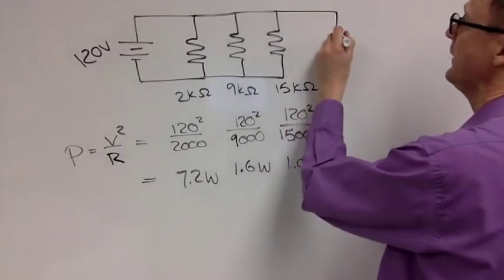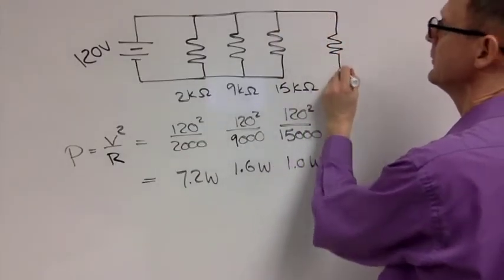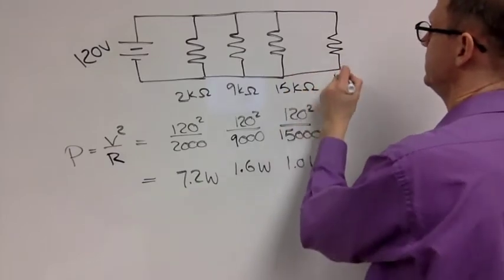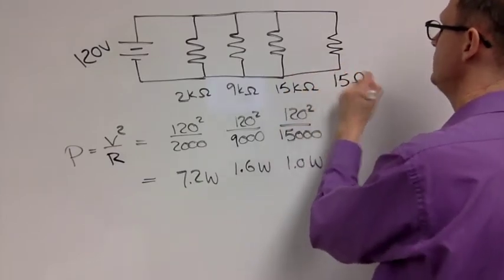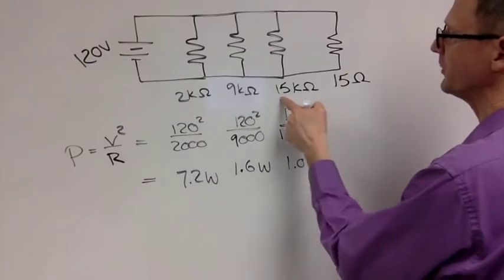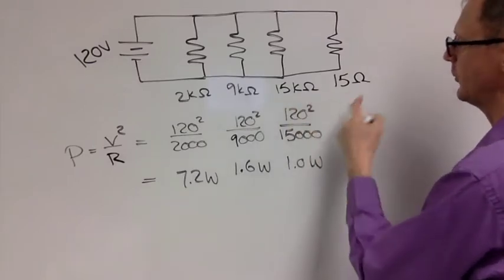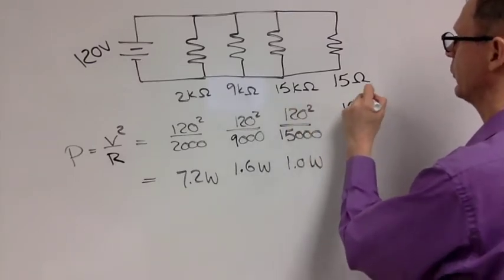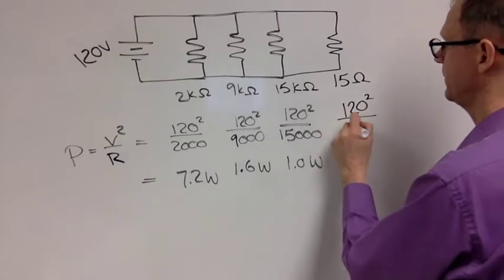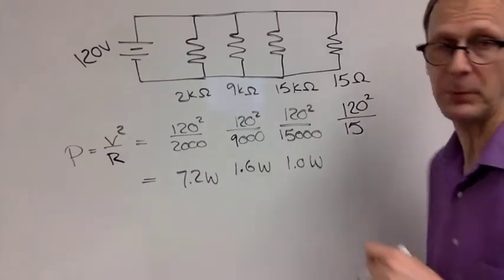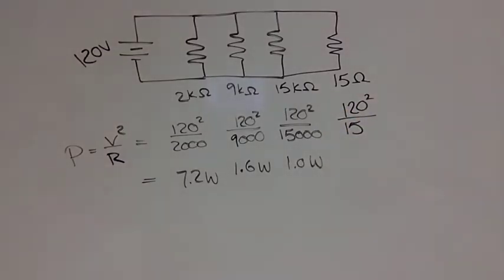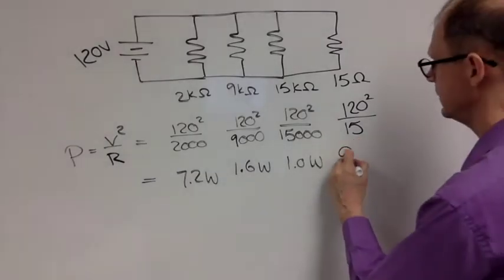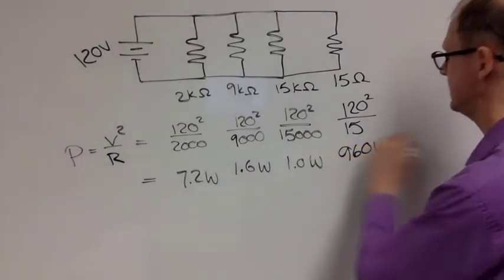I'm just going to add that in parallel here. 15 ohms, not 15,000 ohms, not 15 kilo ohms, but 15 ohms. So we're going to have 120 squared over 15. We're going to punch that into a calculator, and we're going to end up with 960 watts.